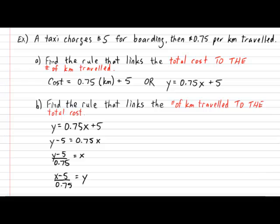So the reversal tells us that if we knew how much we had paid in total, then all we have to do is subtract by 5 and then divide it by 0.75, and that will tell us how many kilometers was traveled. So there it is ladies and gentlemen, as you can see dealing with finding the rule of the inverse of a function is extremely easy.